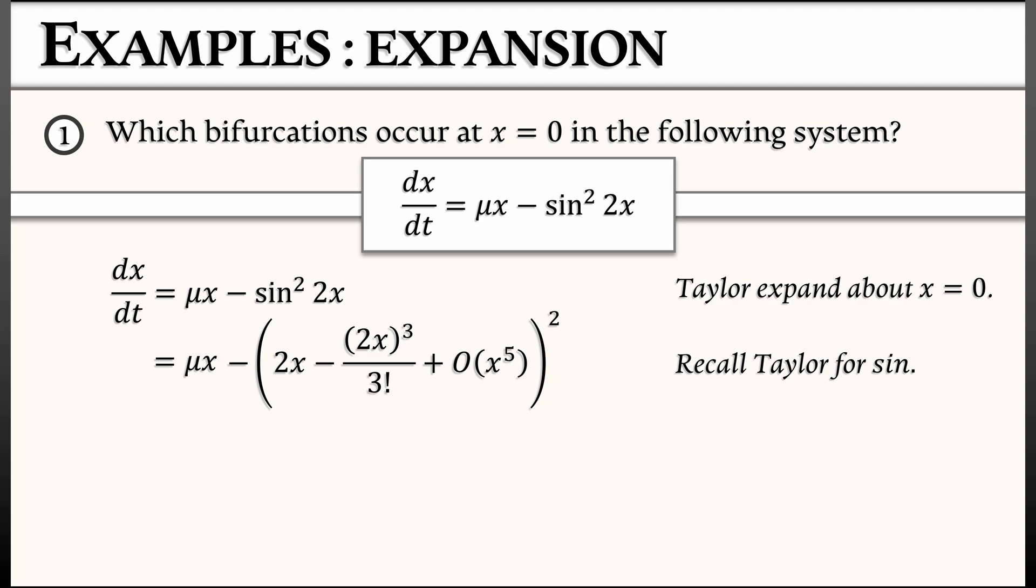I'm going to take all of that and then square it. And the way I'm going to do that is just by using FOIL multiplication and putting all the higher order terms into a big O trash can. When I do that, what do I get? I get mu times x, and then the first term that I'm going to be subtracting off is quantity 2x squared. That's 4x squared. And then guess what? Everything else has order x to the fourth or higher.